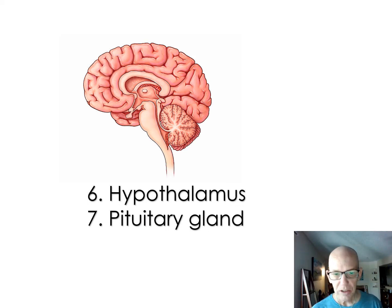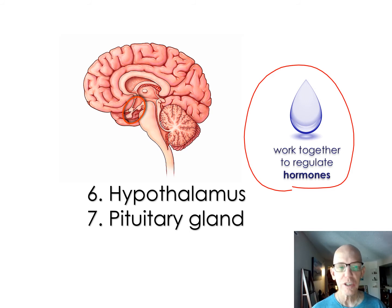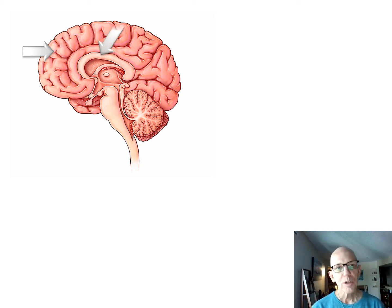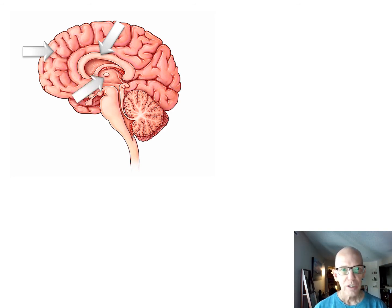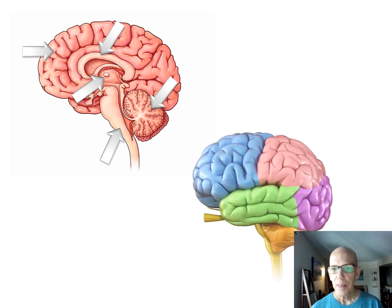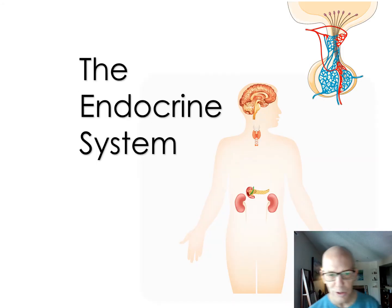Parts six and seven deal with your hormones and the endocrine system. Let me quickly review parts one through five: the cerebrum is the squiggly part with four areas and two halves; the corpus callosum is the bridge; the thalamus is the mail room; the cerebellum balances you out; and the medulla keeps you alive with automatic functions. Now for the endocrine system.